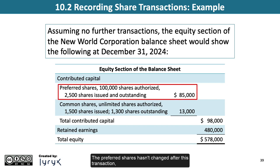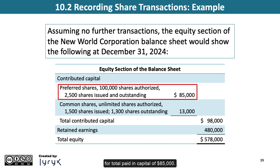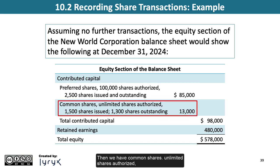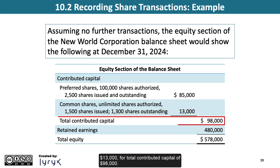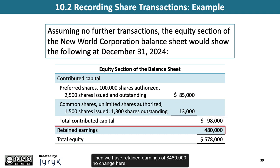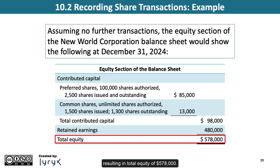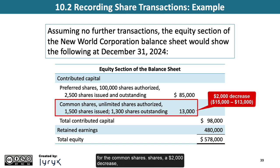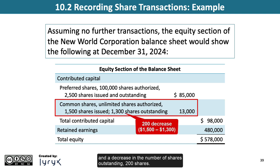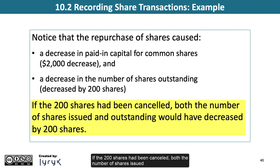The preferred shares are unchanged: 100,000 shares authorized, 2,500 issued and outstanding, for total paid-in capital of $85,000. For common shares: unlimited shares authorized, 1,500 shares issued, but now only 1,300 shares outstanding, meaning 200 shares are sitting in treasury. The total proceeds for outstanding common shares was $13,000, for total contributed capital of $98,000. Retained earnings remain at $480,000, resulting in total equity of $578,000. Notice the repurchase caused a $2,000 decrease in paid-in capital and a decrease of 200 shares outstanding. If the shares had been cancelled, both issued and outstanding would have decreased by 200.